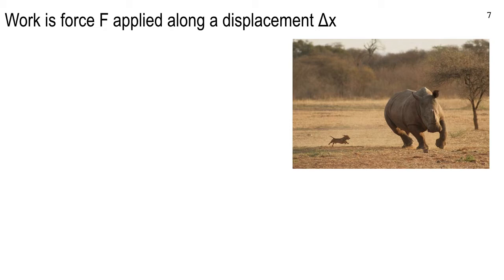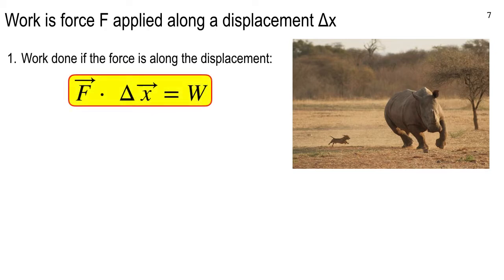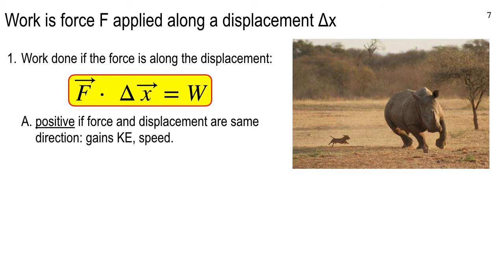Work is the result of a force applied along a displacement — kind of like this little weeder dog chasing a rhinoceros. The work done is along the vector displacement delta x by a force. If the force is perpendicular to the displacement, you don't get any work done. Work is defined as W, the change in kinetic energy. A positive amount of work done if the force and displacement are parallel — same directions. If you're moving to the right and the force is to the right, the force is going to accelerate you to a higher speed, therefore higher kinetic energy.